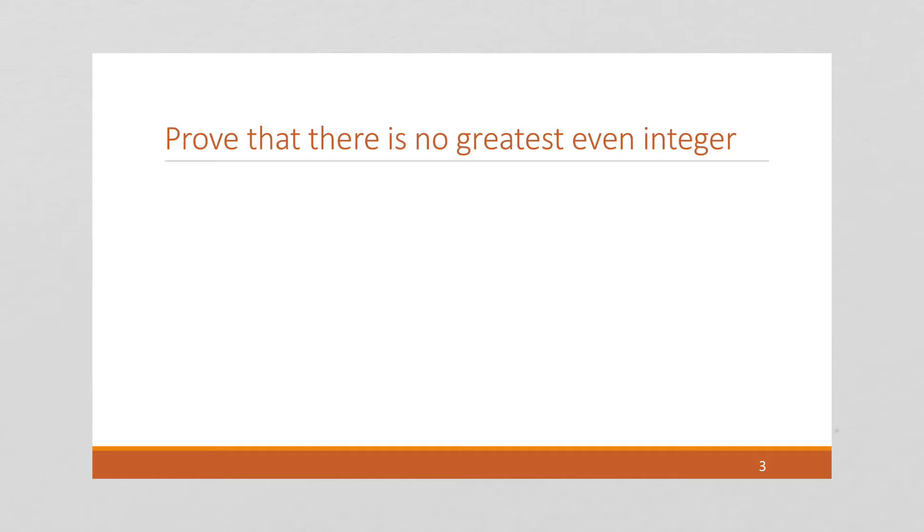A billion is an even integer, and it's a pretty big even integer. But there's always a billion and two, which is bigger than a billion. There's always two billion, which is even and bigger than a billion. There's always a trillion, which is even and bigger than a billion. There's always going to be a bigger even number.